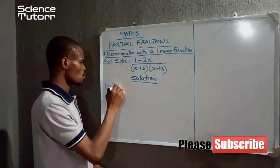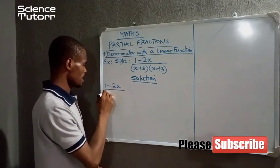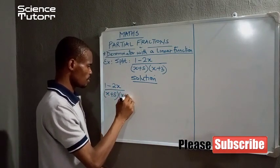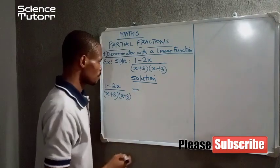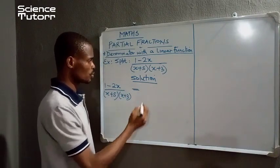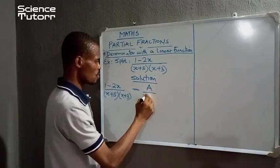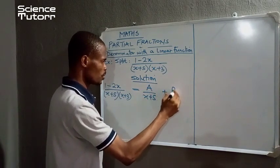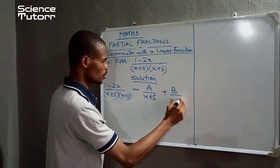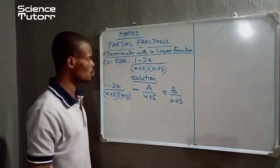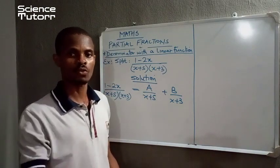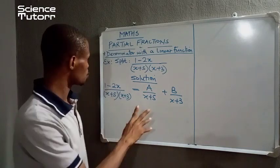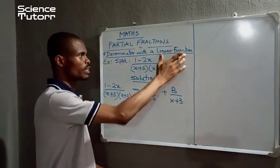So we begin, we have 1 minus 2x divided by (x+5) into (x+3). Two linear functions. So we begin by saying A over (x+5) plus B over (x+3). I shall be using the cover up method which is one of the shortcut methods that are used in solving such a problem based on linear function.